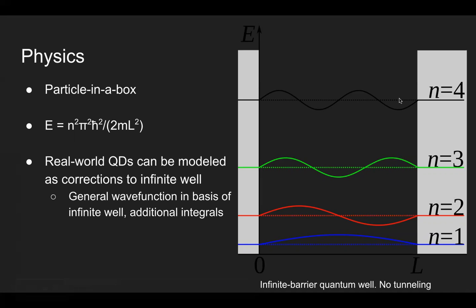Now, real-world quantum dots are not quite this ideal, but they can be modeled as corrections to the infinite well. The infinite well has what are called orthogonal wave functions. So this means that a real-world quantum dot's wave function can be modeled as corrections to the infinite well. And we find that the infinite well happens to be a convenient basis to work in. And by doing so, we can also model the energies as corrections to the infinite well, which is very convenient because, as we see here, the infinite well energies are quite straightforward.